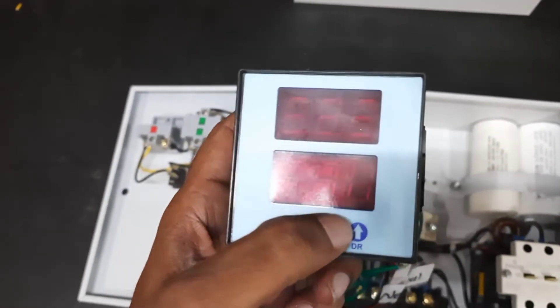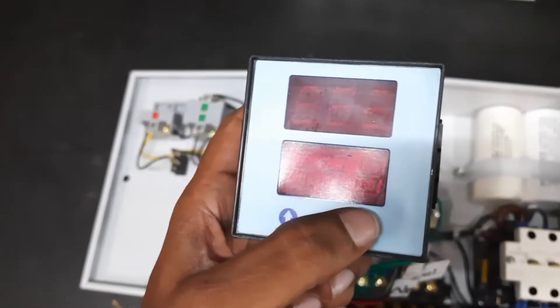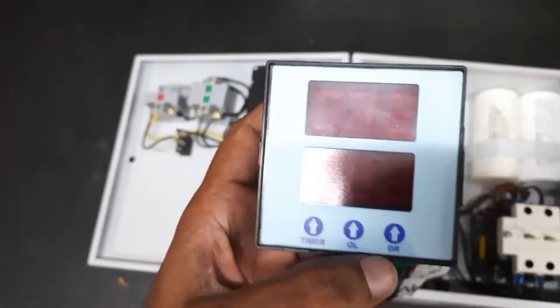Here, three switches are given: timer switch, overload switch, and dry run switch, that is DR switch.